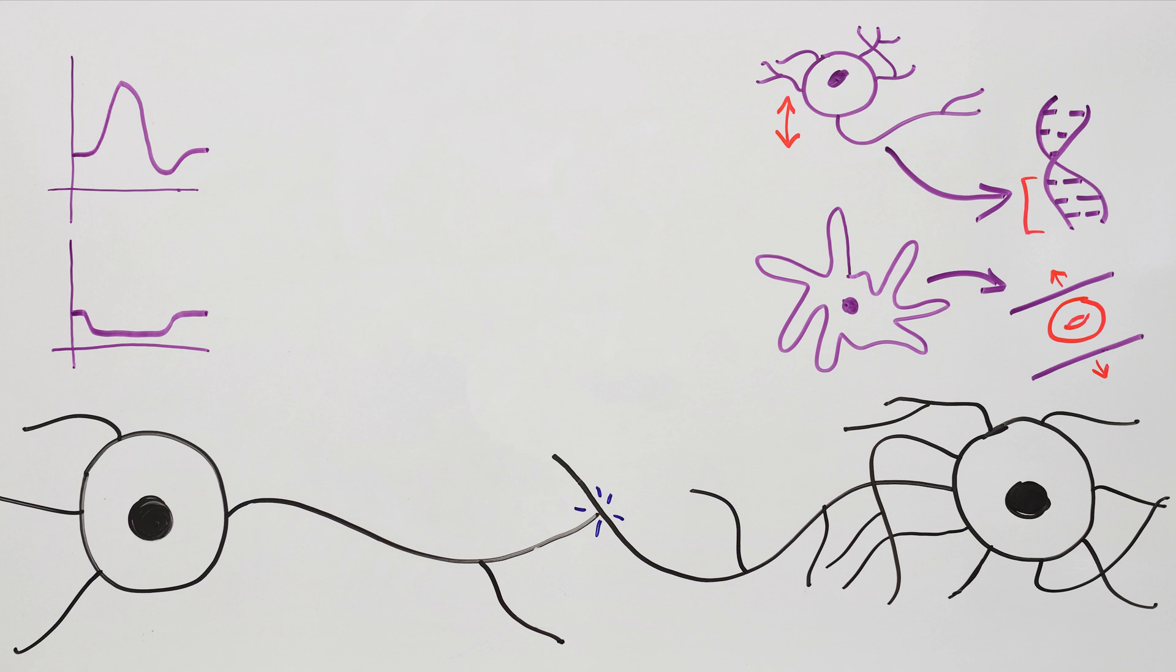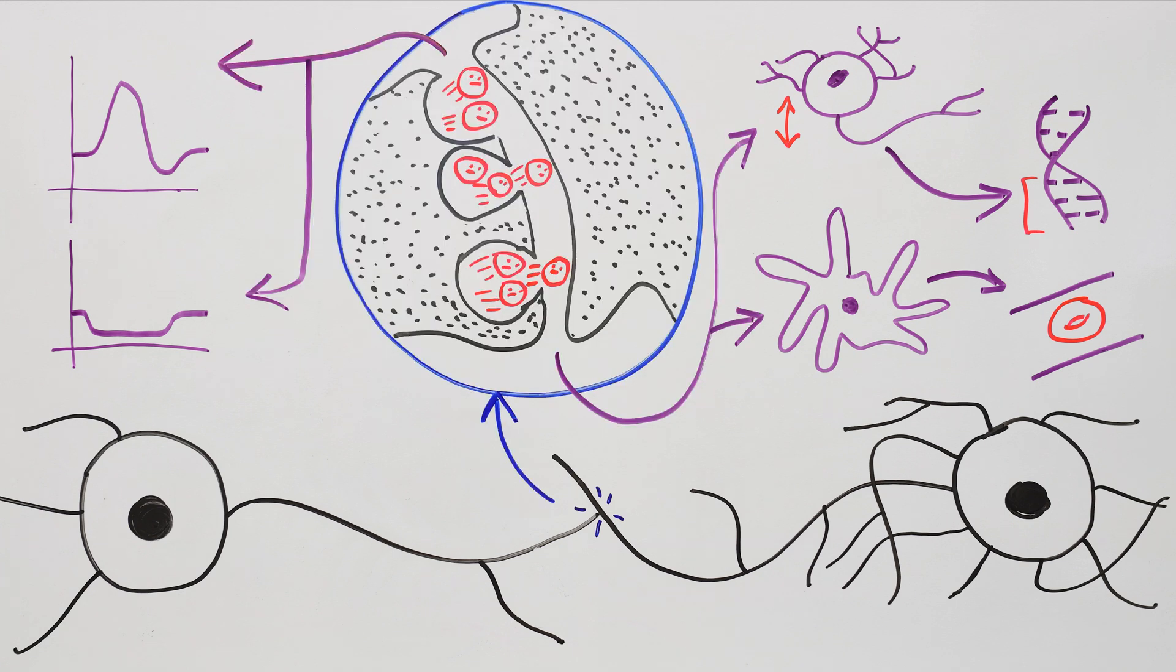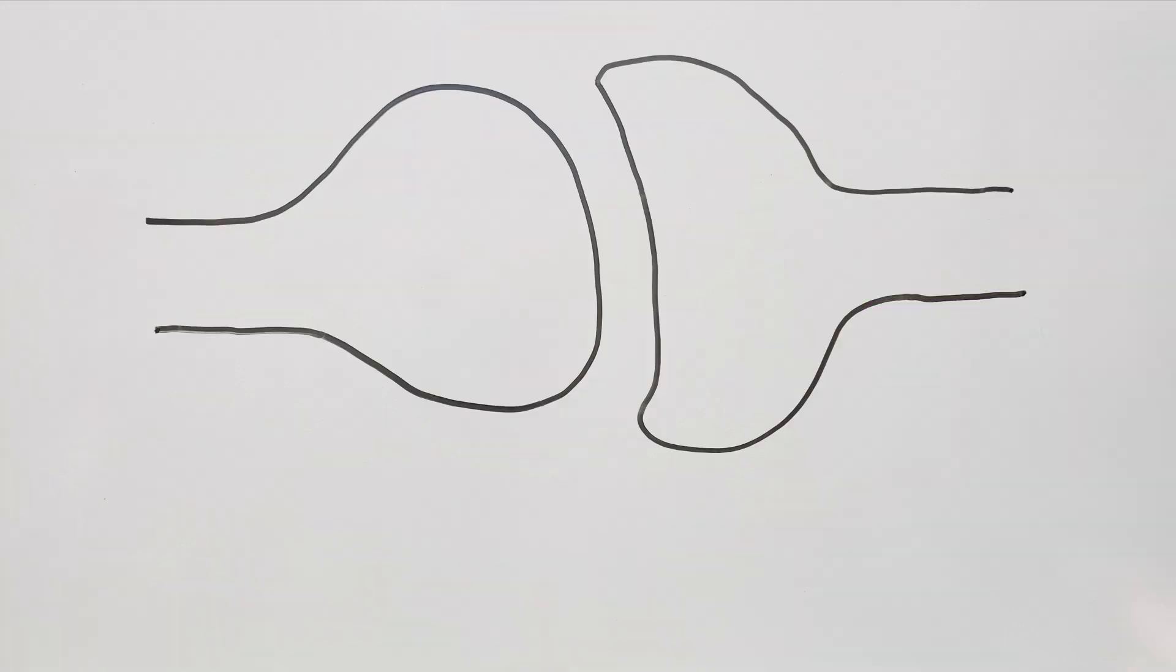So the neurons came up with an interesting idea. They would transfer these messages with little chemicals called neurotransmitters. Where the two neurons would need to transfer a message, they agreed to arrange each other in a synapse.